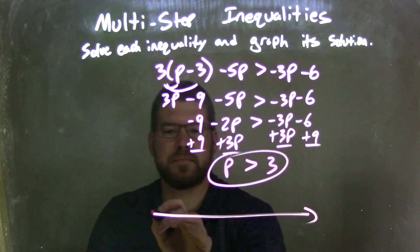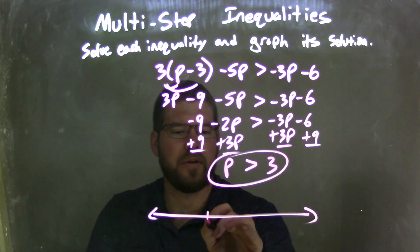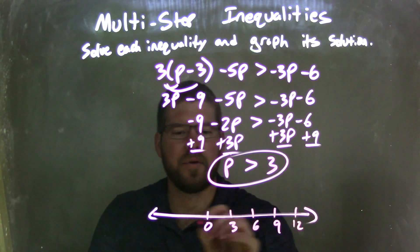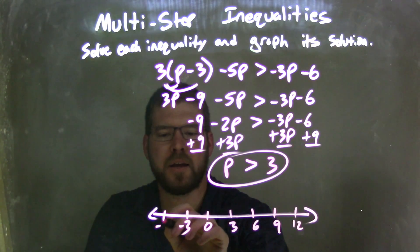So now I graph this. Let's go by 3s: 0, 3, 6, 9, 12, negative 3 and negative 6.